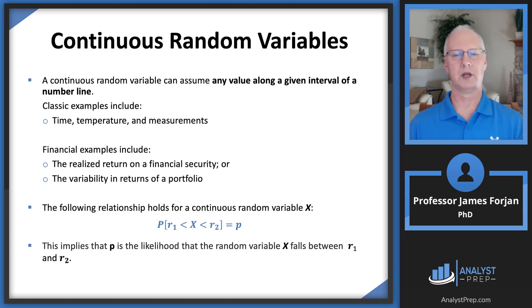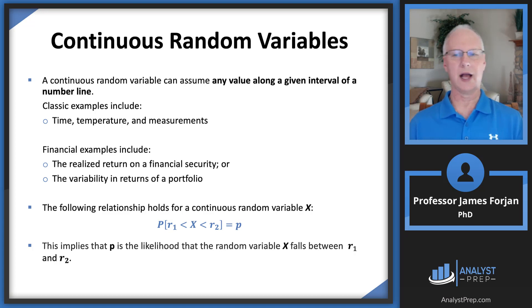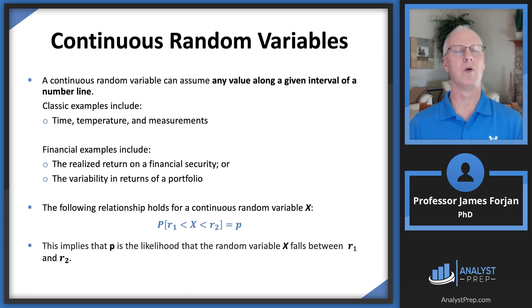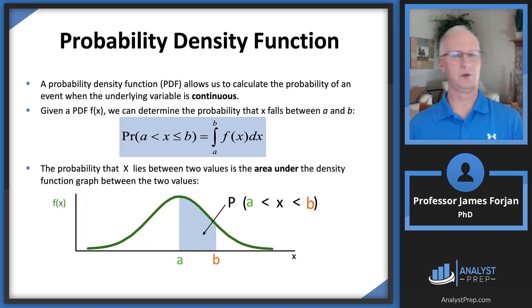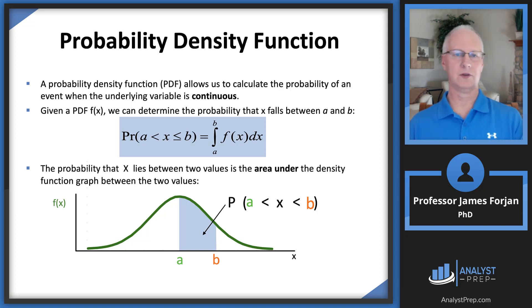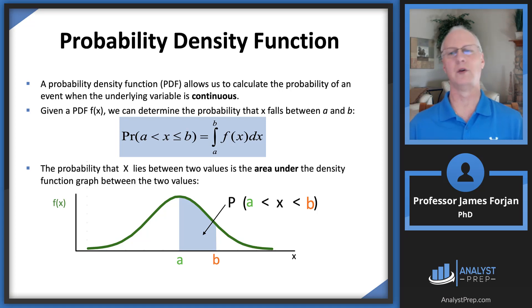Formally, p is the likelihood that some continuous random variable x will fall between two numbers, r1 and r2, where r2 is greater than r1. The probability density function applies to continuous random variables — given a PDF, we're trying to determine the probability that x falls between two numbers, a and b, where b is greater than a.